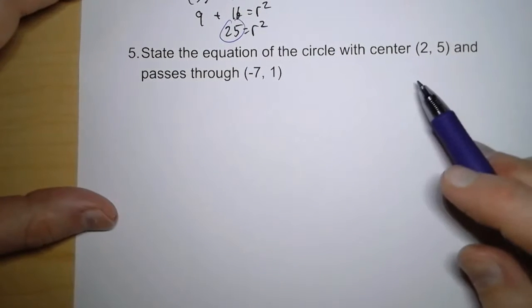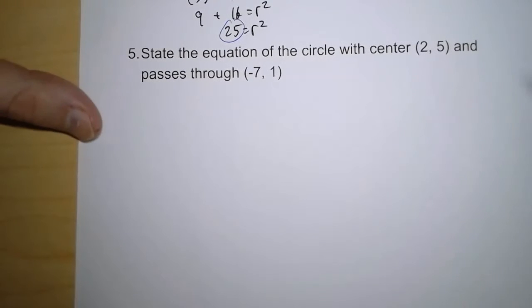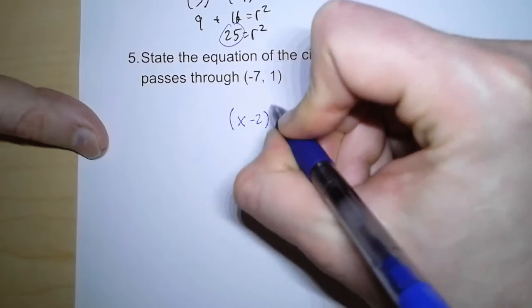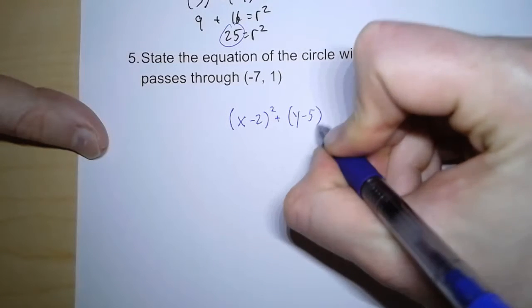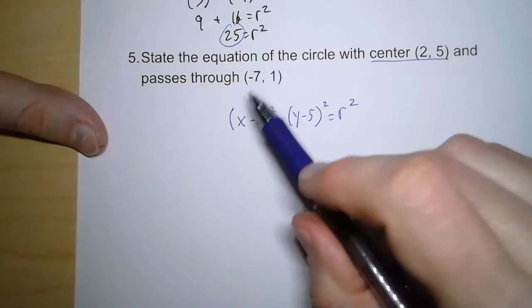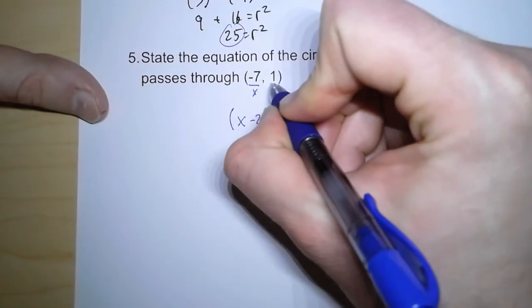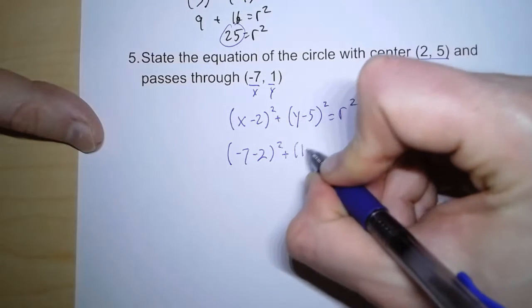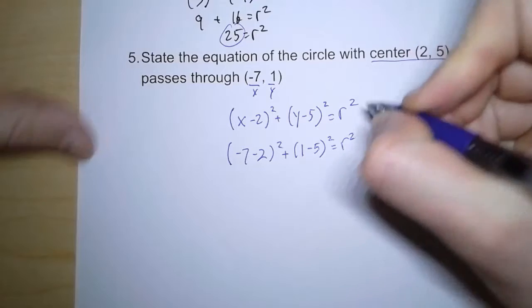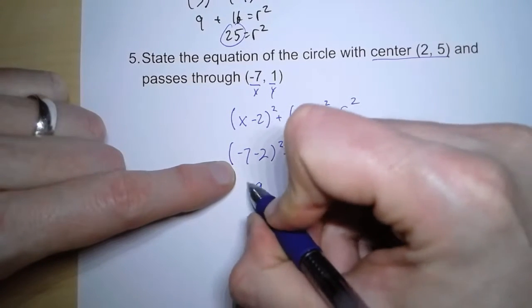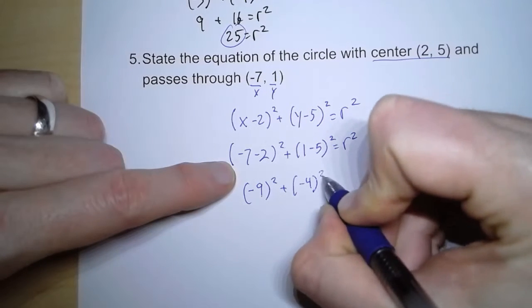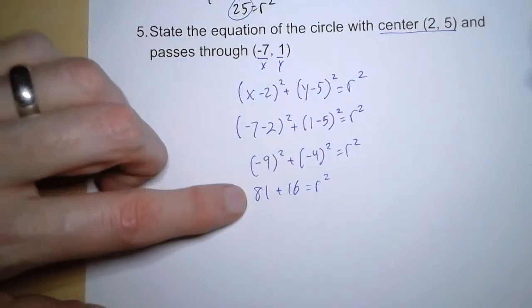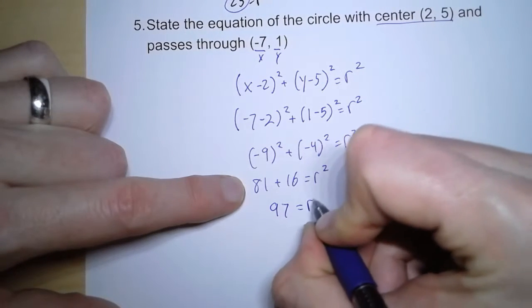Now, number 5 is very similar to number 4, except it's a little bit easier, because some of the work has been done for us. We already know where the center is, at 2 comma 5. So we can write this as x minus 2 quantity squared, plus y minus 5 quantity squared, equals r squared. And we can use this point for x and for y. So I can substitute negative 7 in for x, and I can substitute 1 in for y. And so by doing this, I get negative 9 quantity squared, plus negative 4 quantity squared, equals r squared. So this means we have 81 plus 16 equals r squared. And so that leaves us with a value of 97 for r squared.